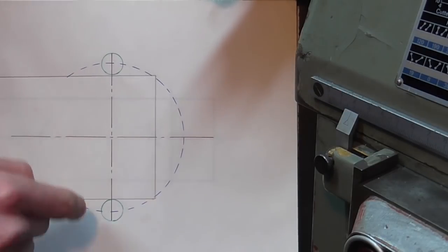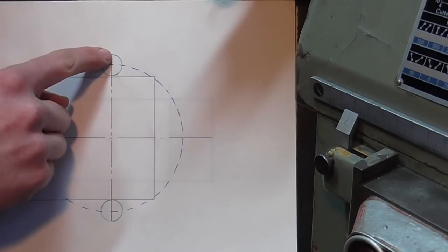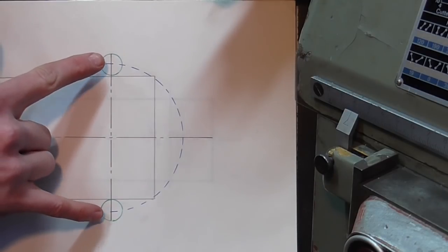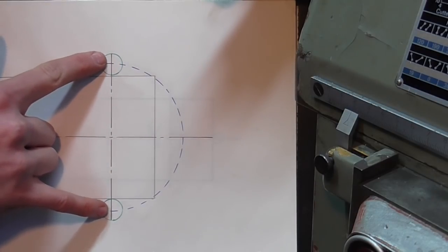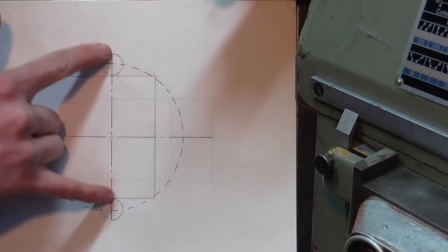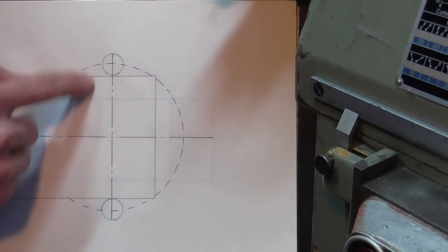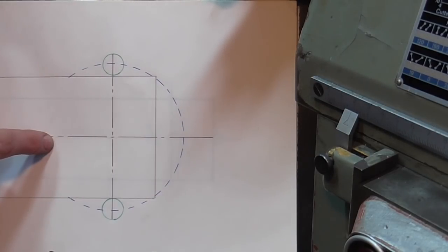As you sweep the indicator it will reach a natural high spot on either side and we're trying to make it so that when it reaches those high spots we've got the same number. If you achieve the same number on both high spots then you are in the middle of the component and the centreline of the spindle and the centreline of the component are on top of each other.